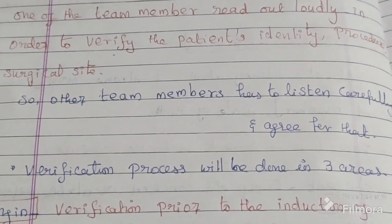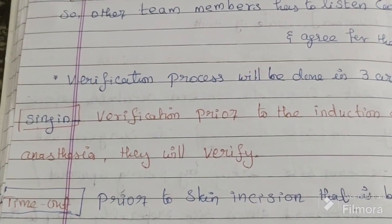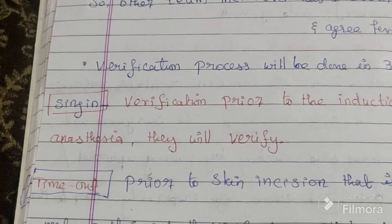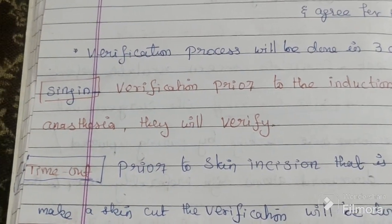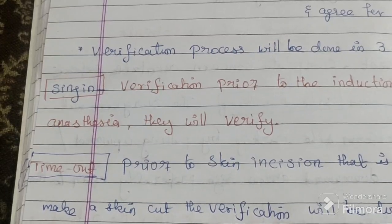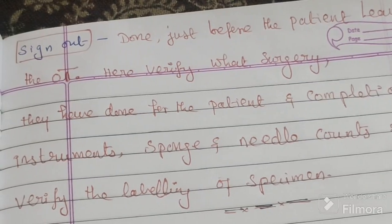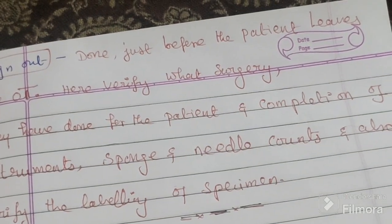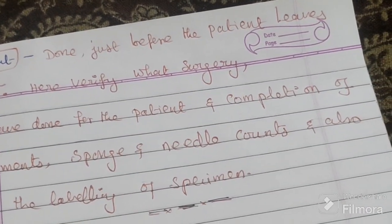This verification process is done in three areas. Sign in means verification prior to the induction of anesthesia — before giving anesthesia, they will verify. Time out means prior to skin incision — before making a skin cut, verification will be done. Sign out is done just before the patient leaves the operation theater. At sign out, they verify what surgery was done, completion of instrument, sponge and needle count, and labeling of specimen.